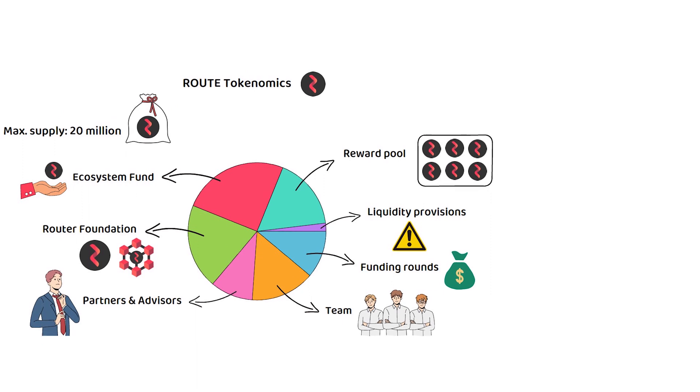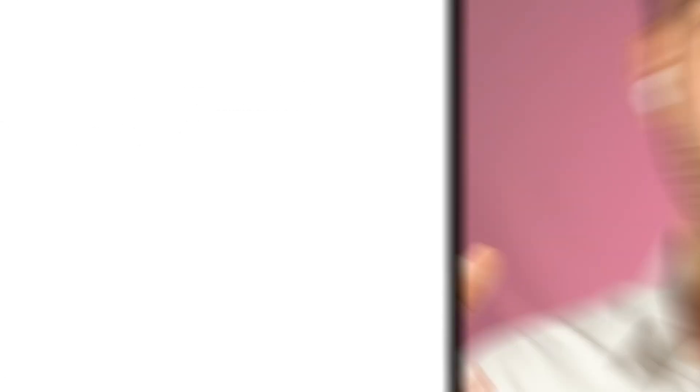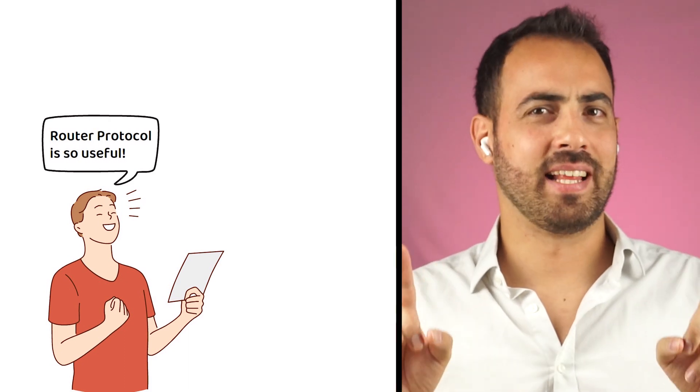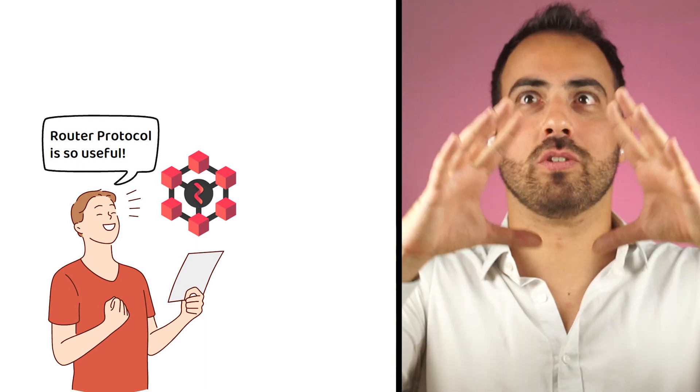These allocations are all released slowly over time to prevent inflation and crashing the price. On paper, Router protocol is an excellent idea. It has a valid use case that could come in very handy should the landscape continue to grow.